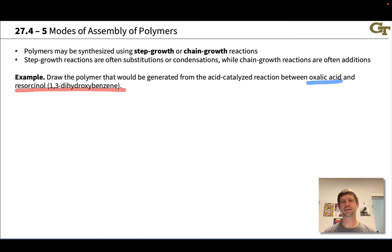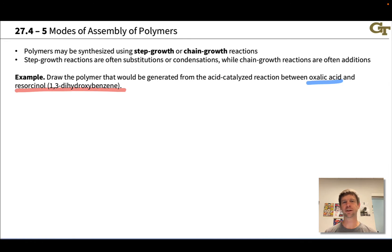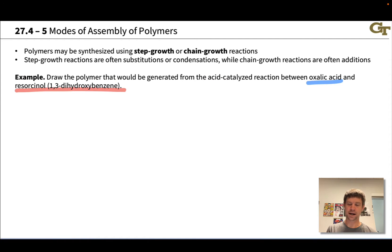In this video, we're going to start looking at examples of polymerization reactions and predict the products of polymerization, also noting where we would expect step growth or chain growth polymerization. The first example involves a polymerization between oxalic acid and resorcinol, or 1,3-dihydroxybenzene, catalyzed by acid.